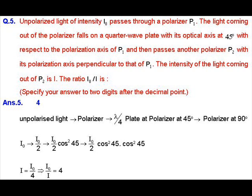Now, it is further been passed through a polarizer P_2 which is having an axis perpendicular to that of P_1. So the polarizer is basically at an angle of 45 degrees with that of the quarter wave plate. So the final intensity that we will get will be equal to I_0 by 2 cos square 45 into cos square 45, which will be equal to I equals I_0 by 4, and this ratio of I_0 by I will be equal to 4.